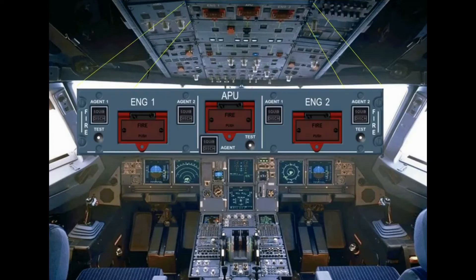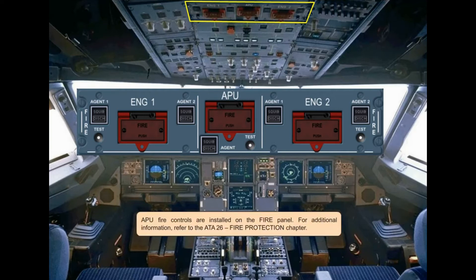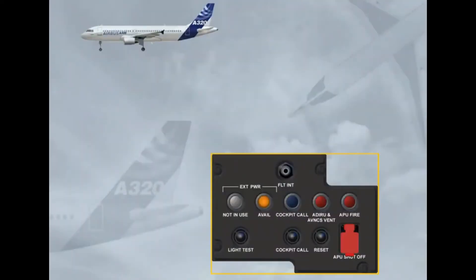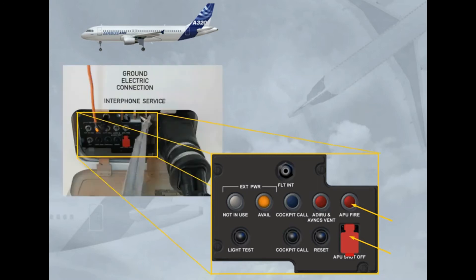APU fire controls are installed on the fire panel. For additional information, refer to the ATA 26 fire protection chapter. There is also an APU shut off push button and an associated APU fire warning light located on the external power panel; refer to the ATA 26 fire protection chapter. This panel is located in front of the nose gear bay.